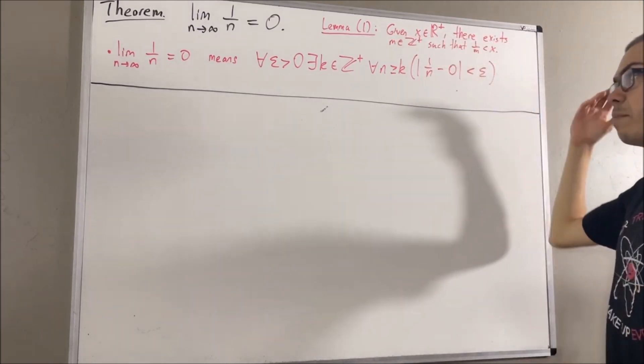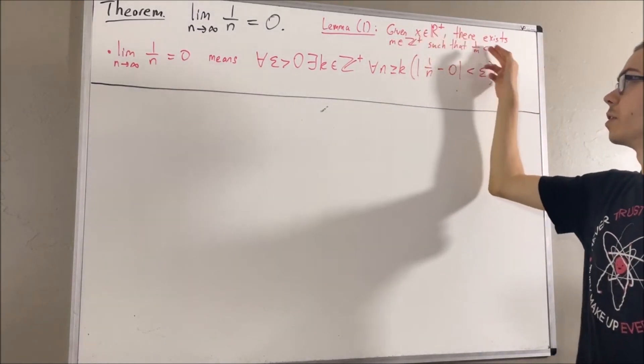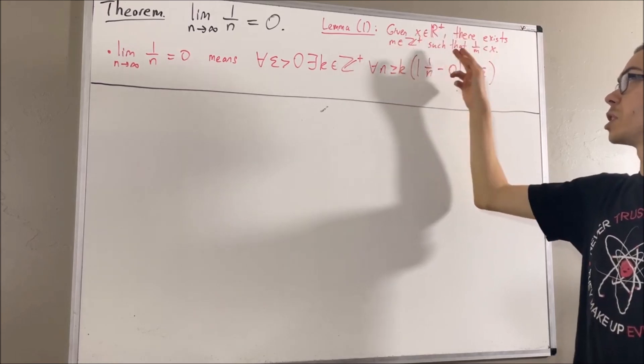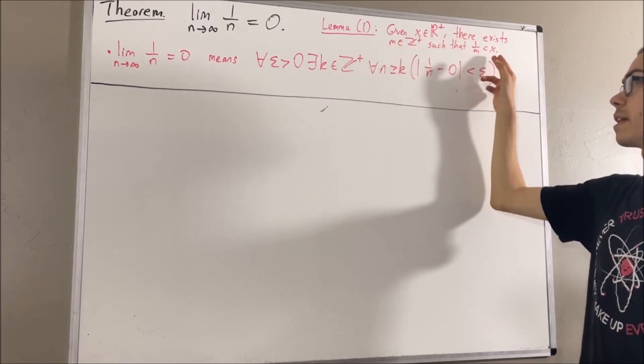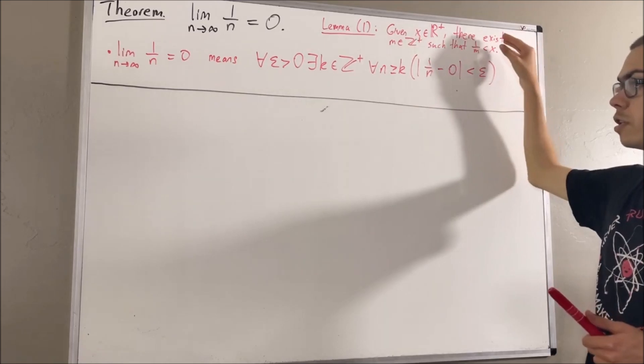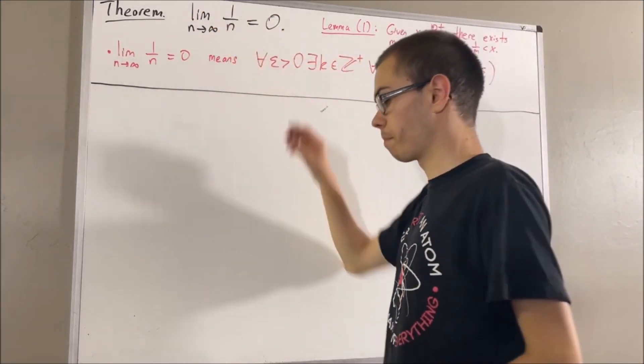Given any positive real number x, there exists a positive integer m such that 1 over m is less than x. We're going to use this result in the proof of this theorem.